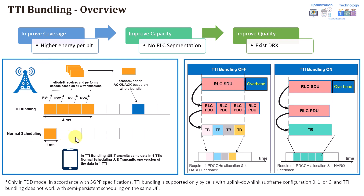Initially, let me explain how TTI bundling in general is working. In the normal scheduling scenario, if you look at the left part of the figure, the resources will be scheduled within one millisecond. All the data will be sent, for example, within a particular TTI from the UE in uplink to the eNB, transmitted in that specific TTI.